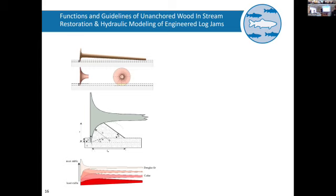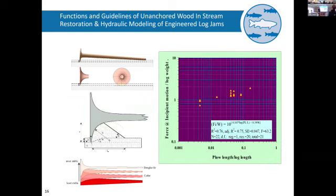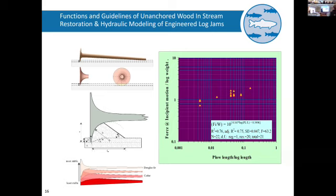Different species matter too — it's not just cut logs versus root wads. The taper of a tree can affect all of this. From some experiments we did when we had an excavator out on a site, we looked at the initial force for release or set in motion of the log, and this is a log-log plot showing that it takes a greater force — the more plow length, basically the depth below your bed — to initiate motion.